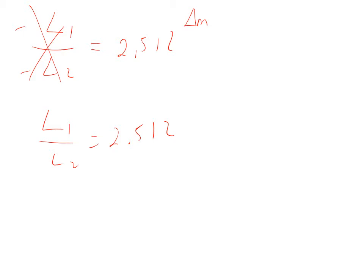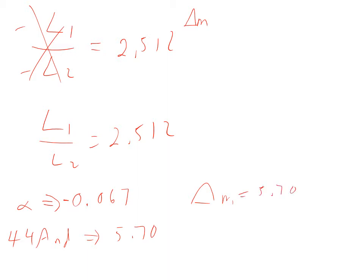What's the difference in magnitudes? For Alpha Carini, the magnitude was negative 0.067. For 44 Andromeda, it's 5.70. The difference in magnitudes is 5.70 minus negative 0.067 — and a negative negative means you add — giving a difference of 5.767.